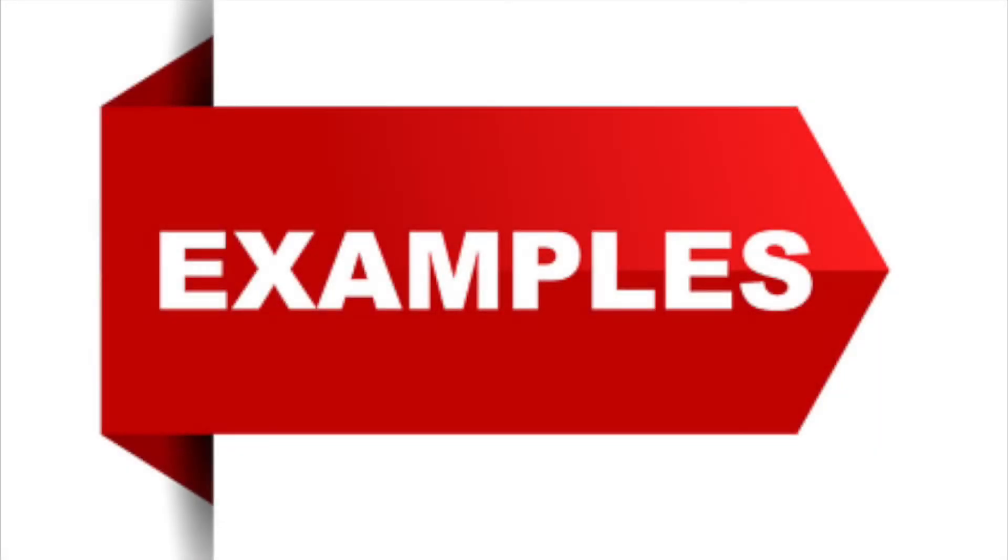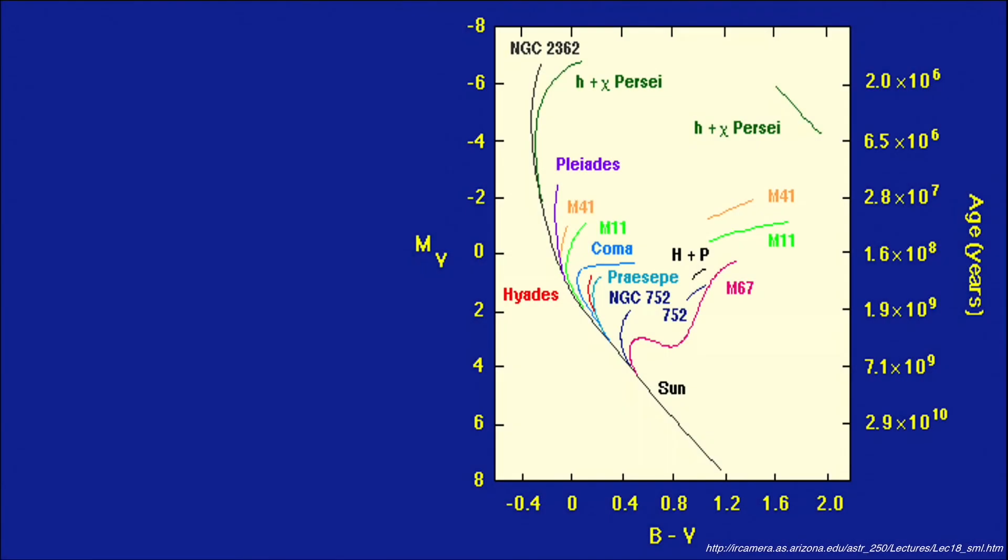Let's take a look at some examples of using an HR diagram to determine the age of a star cluster. On this particular HR diagram, we have a series of curves that represent the positions of stars in the various clusters listed.